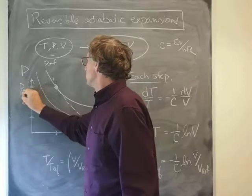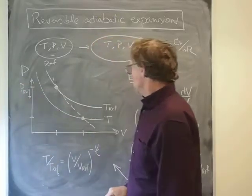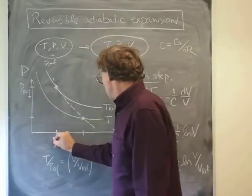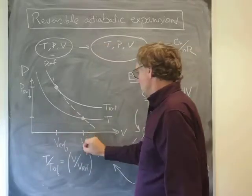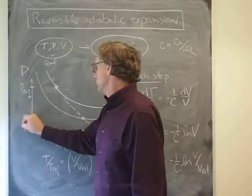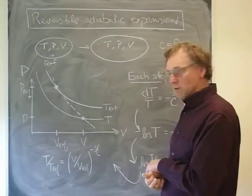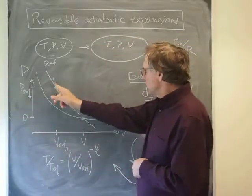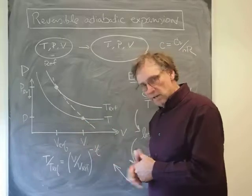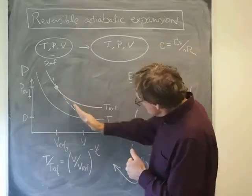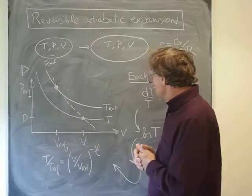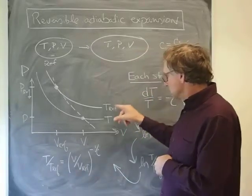To annotate this, that would be P ref and V ref, and we're going to a final volume and final pressure by those values. Because this is an adiabatic reversible expansion, the gas is going to cool down. I've drawn it crossing over to cooler isotherms—that's the reference temperature and then the final temperature is going to be colder.